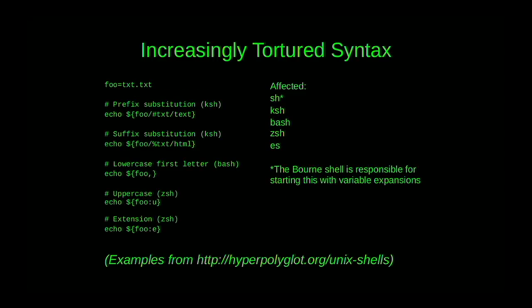As a consequence of all these things — especially the previous problems making it harder to share code — there's a tendency to build in more and more features and use increasingly tortured syntax to access them. Maybe you want to grab the file extension, and zsh and bash include ways to do that. We can blame the Bourne shell for starting this with variable expansions, which are a little strange, and then we carry them further. The fact that putting a variable in curly braces with a comma makes the first letter lowercase, and two commas make the entire thing lowercase — it just seems increasingly strange.